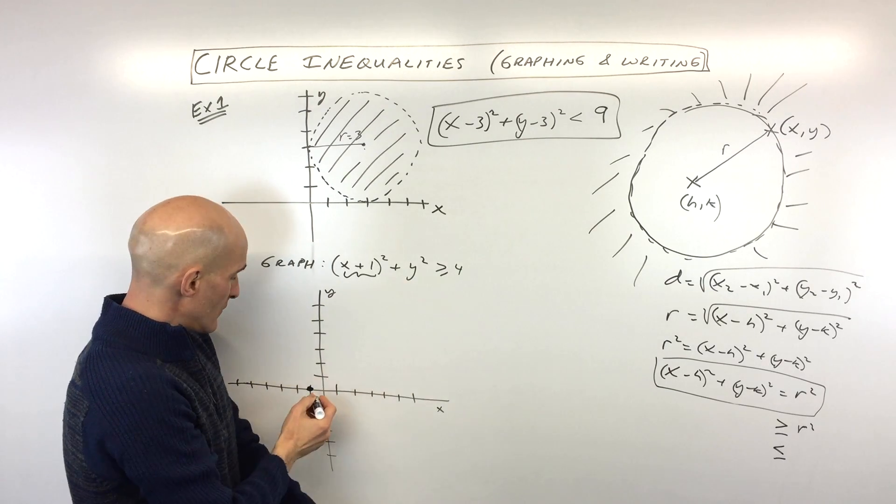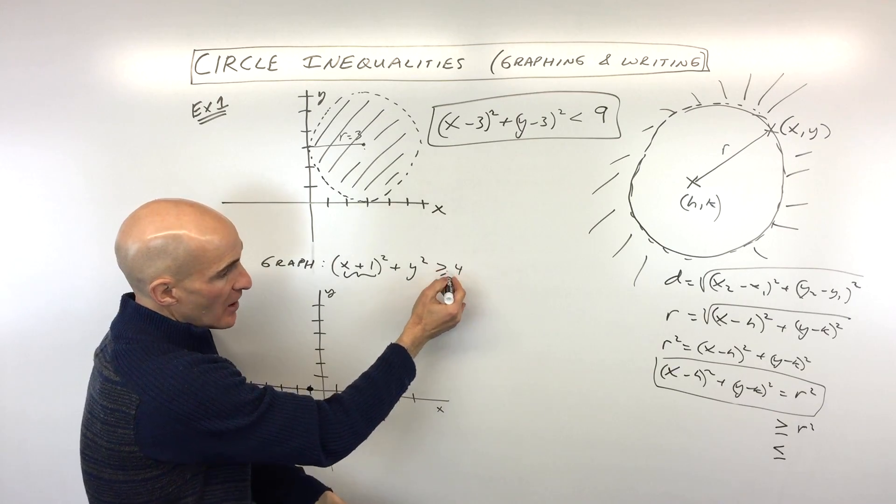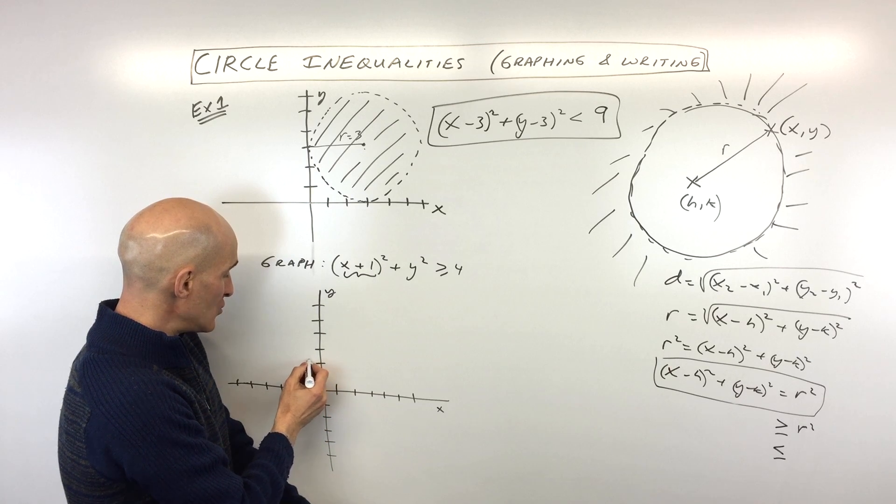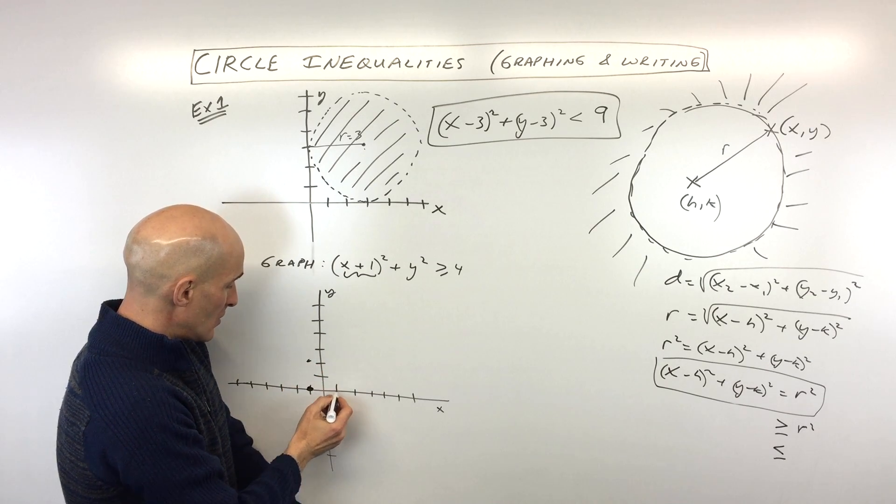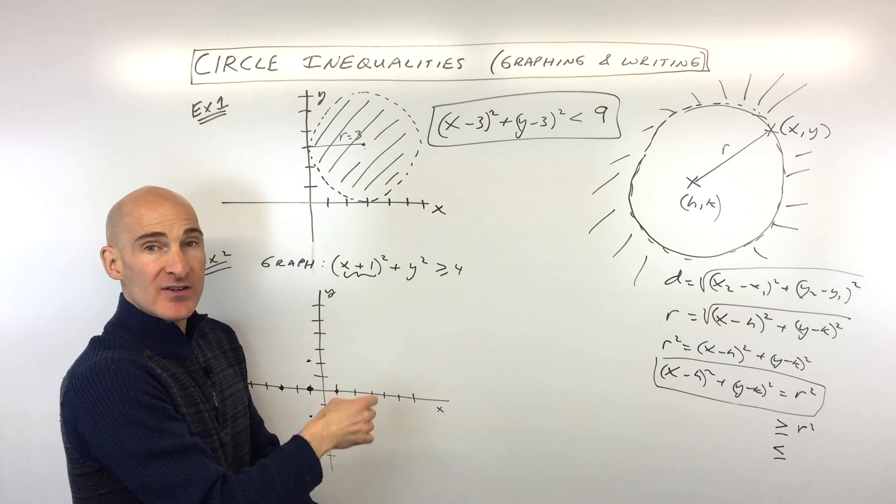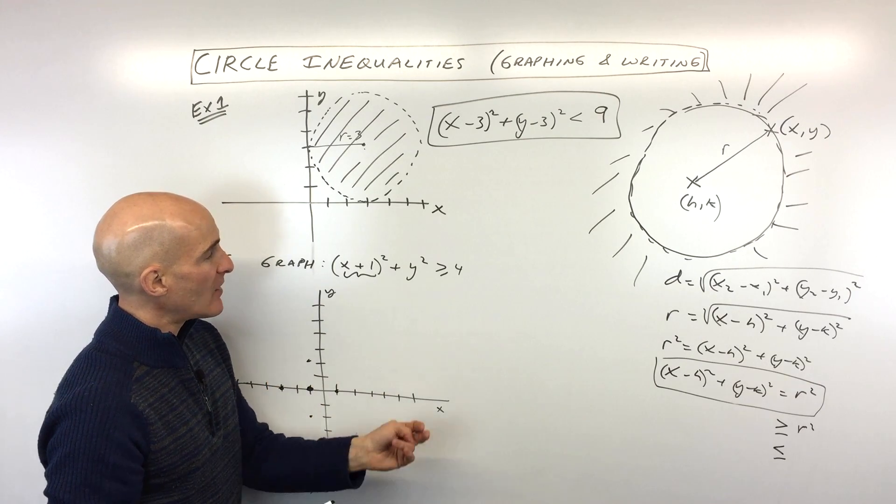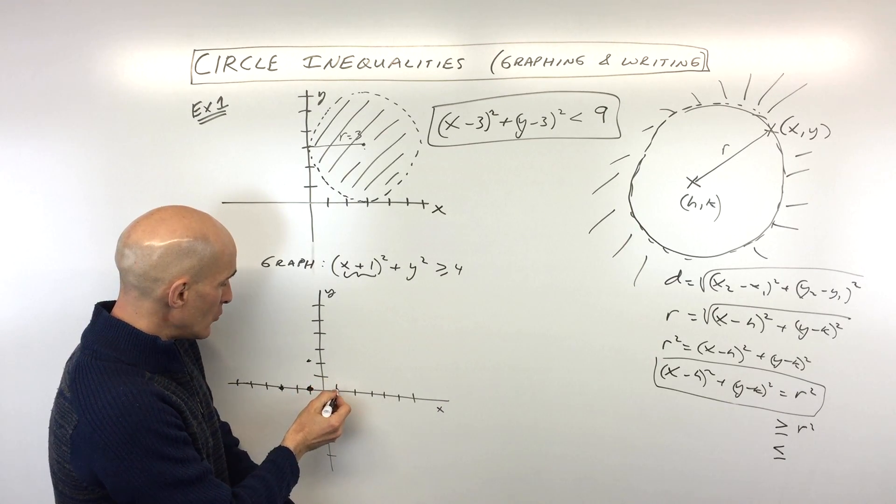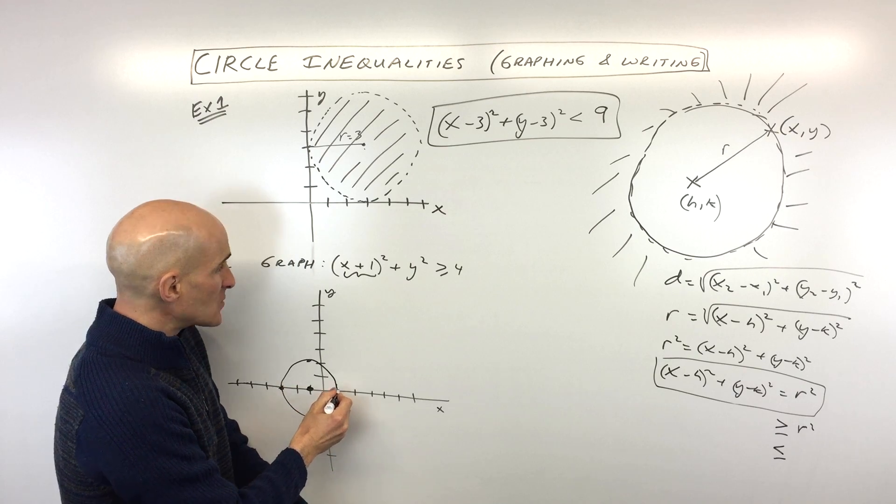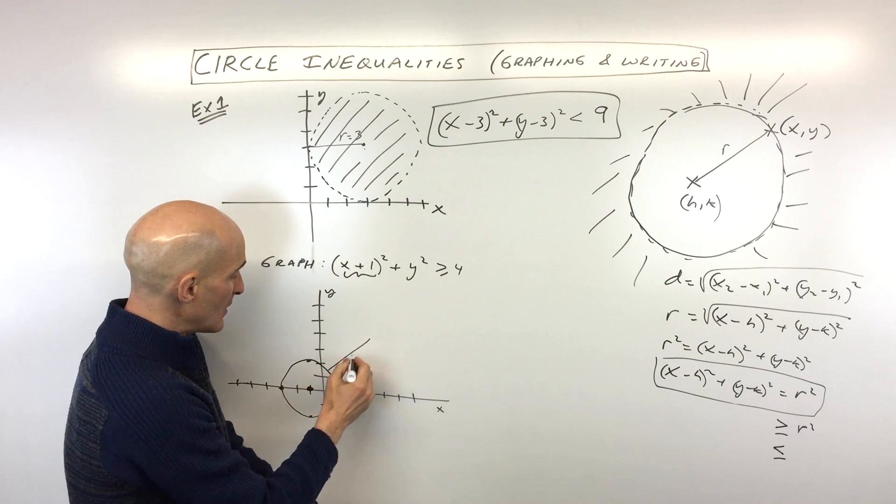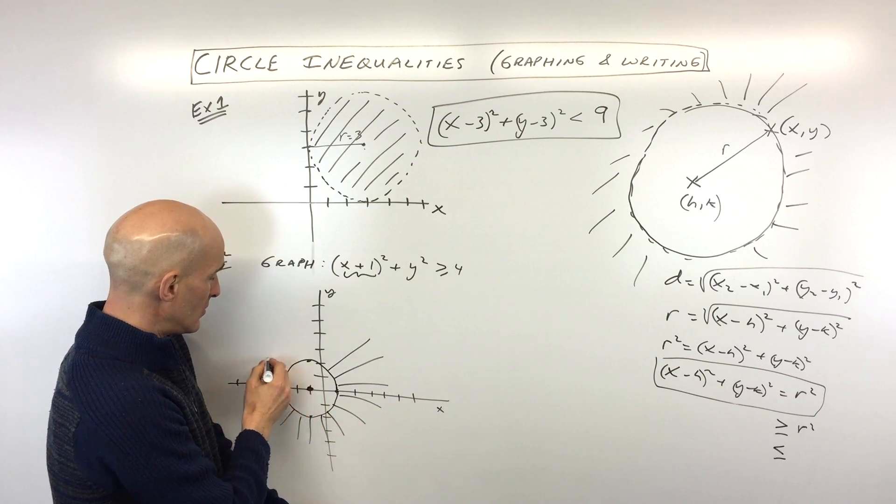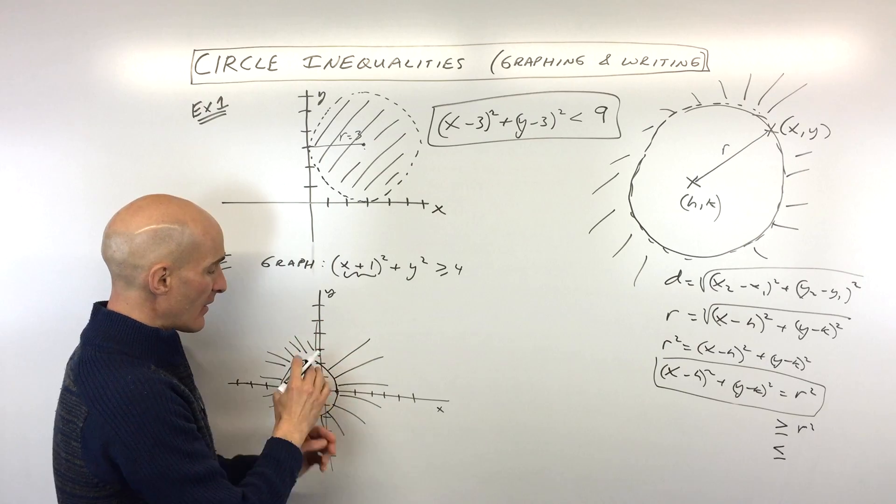And then the radius is actually 2, see how this is r squared, so if we take the square root that's going to be 2, so I'm going to go up 2, down 2, right 2, and left 2, just to kind of give us some key points, some easy to identify points. And see how this is greater than or equal to, so equal to means it includes the points on the circle, as well as the points that are greater than, meaning further away, so we're actually going to be shading the outside of the circle like that.